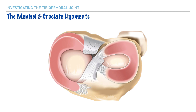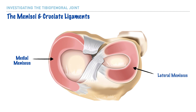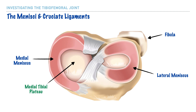Now let's take a closer look at the menisci and cruciate ligaments. The medial meniscus is a larger, open C-shaped structure, whereas the lateral meniscus is a more closed C-shaped structure. The presence of the fibula helps indicate which side is lateral. Once the menisci are labeled, it becomes easier to identify the medial and lateral tibial plateau, where we also find the articular cartilage of the knee, and the attachment sites of the anterior and posterior cruciate ligaments.